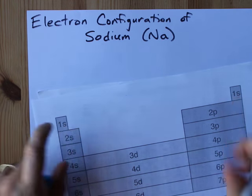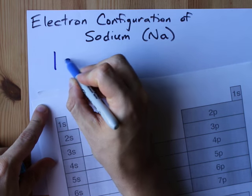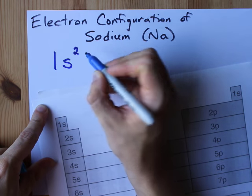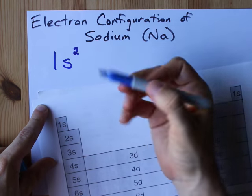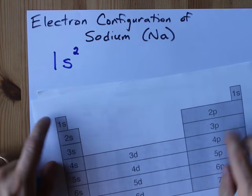We'll start at the beginning, 1s2. We write 1s, and it's kind of like squared, but it's a superscript to show that there's two electrons in there.